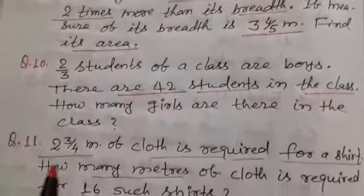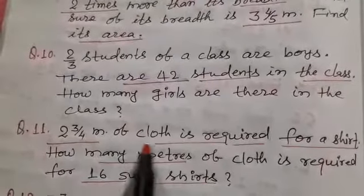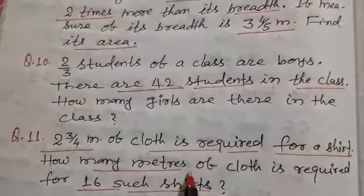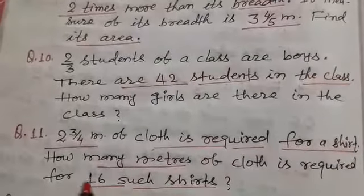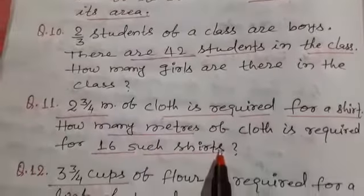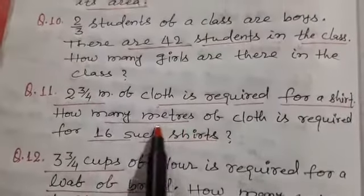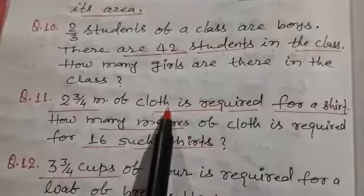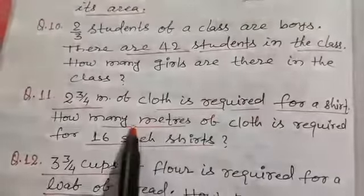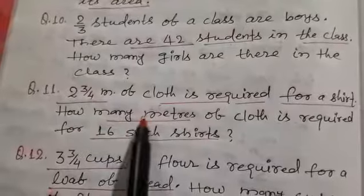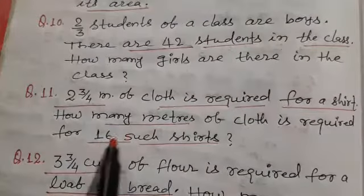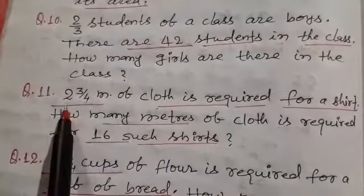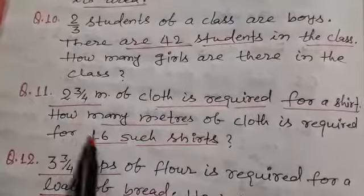Question number 11 is 2 and 3 by 4 meter of cloth is required for a shirt. How many meters of cloth is required for 16 such shirts? Here 2 and 3 by 4 meter of cloth is required for a shirt, so to find the required quantity of cloth, it is needed to multiply these two numbers.